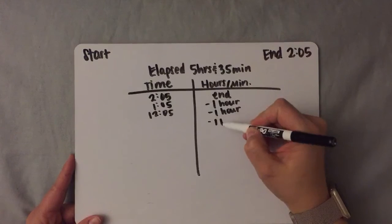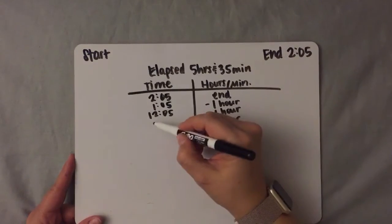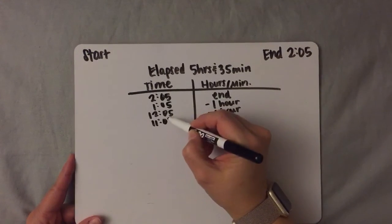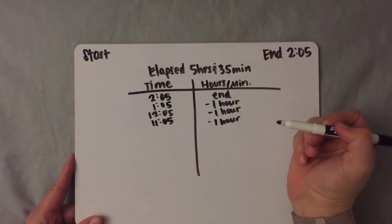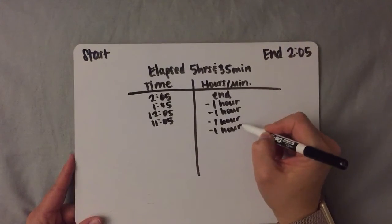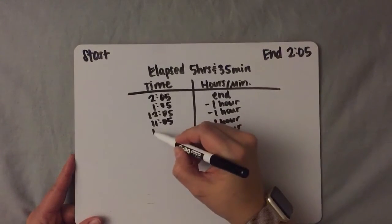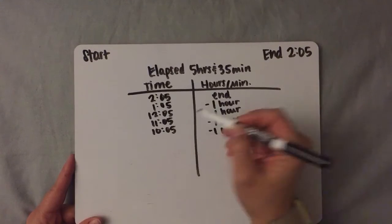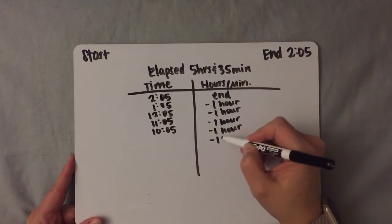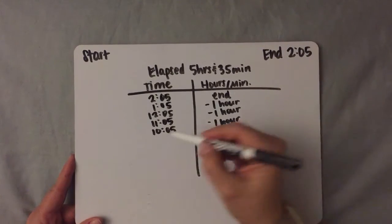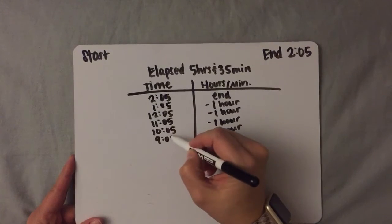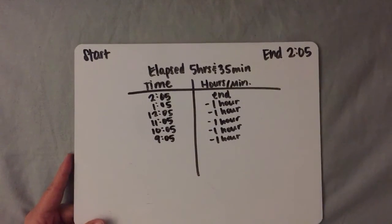So if I take away another hour it will be 11:05. If I take away another hour it's 10:05. And if I take away the last hour of our elapsed time, it is 9:05.